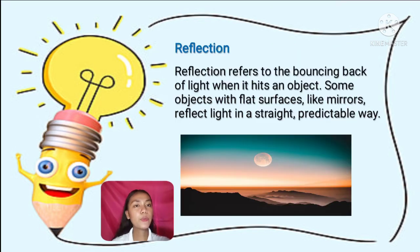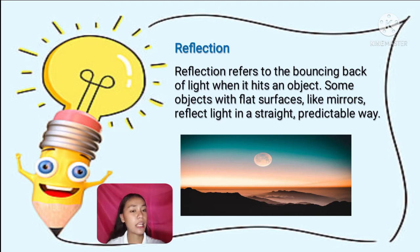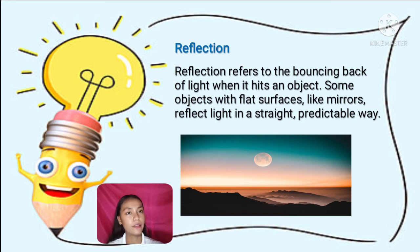Another interaction is reflection. Reflection refers to the bouncing back of light when it hits an object. Some objects with flat surfaces, like mirrors, reflect light in a straight, predictable way. We see objects because they either give off their own light or light reflects off the objects and enters our eyes. The moon is an interesting example — it doesn't make its own light. We can see the moon because it reflects light from the sun. Some objects with uneven surfaces, like rocks, reflect light in a scattered way.